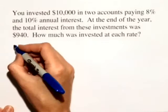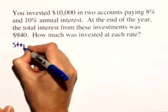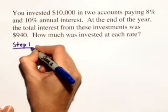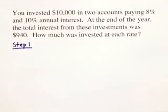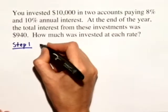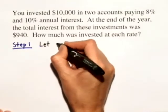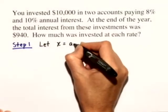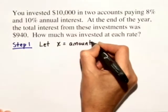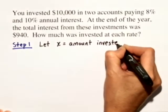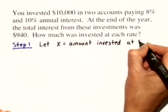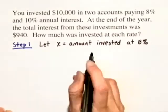Well, in step one, we need to start and let X equal some unknown quantity. Now, it really doesn't matter whether we let X equal the amount invested at 8% or the amount invested at 10%. So let's just say we'll let X equal the amount invested at 8%.